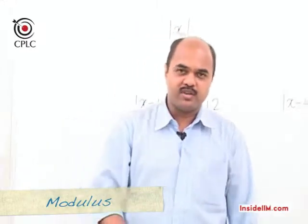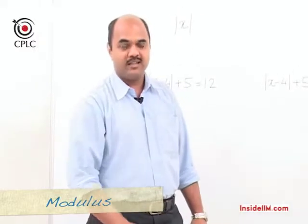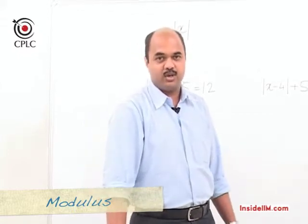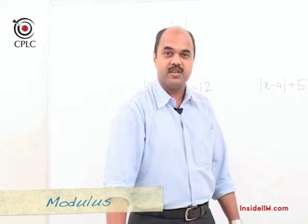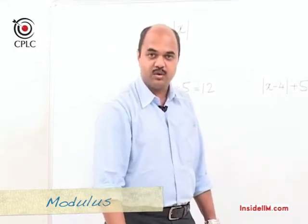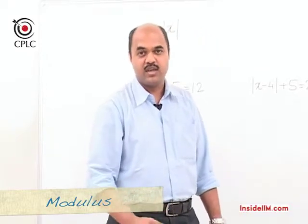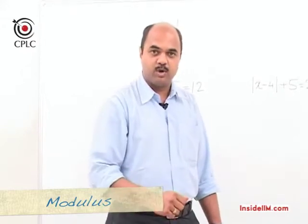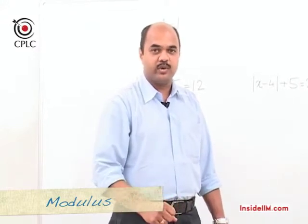One of the most common questions asked in class is: what do you definitely know about mod x? The most common answer is mod x will always be positive. That's incorrect, because mod x may not always be positive. Mod x will always be non-negative, because modulus or absolute value can be zero. So saying mod x is always positive implies it can never equal zero, which is incorrect. What we definitely know is that absolute value is always non-negative.